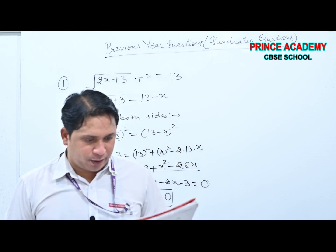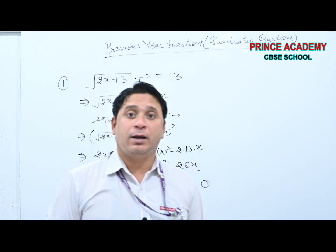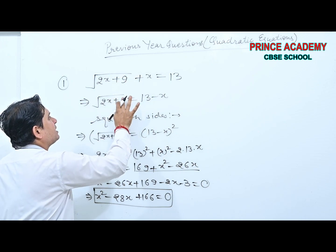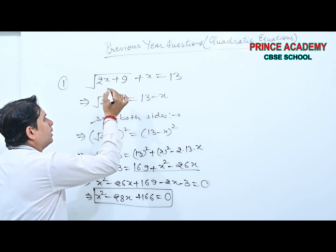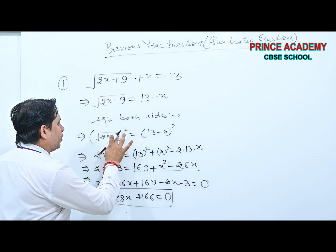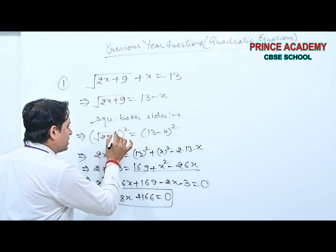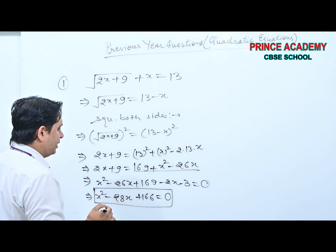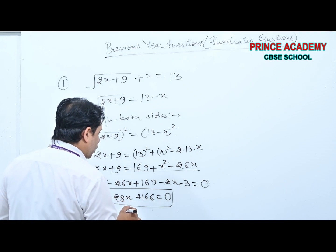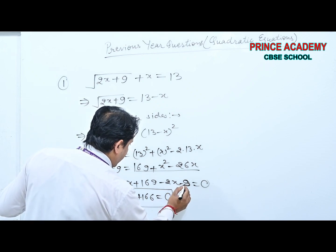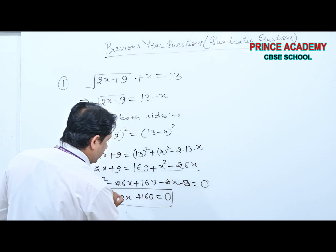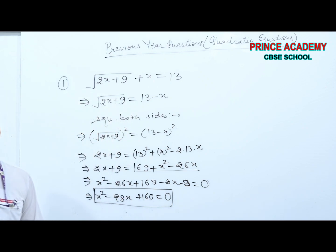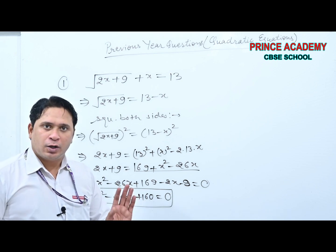Actually, by mistake I wrote 3, but the constant was 9. The correct equation is x² − 28x + 160 = 0. Apologies — two questions were together and I mixed the statements. You should not make such mistakes; you would lose marks.